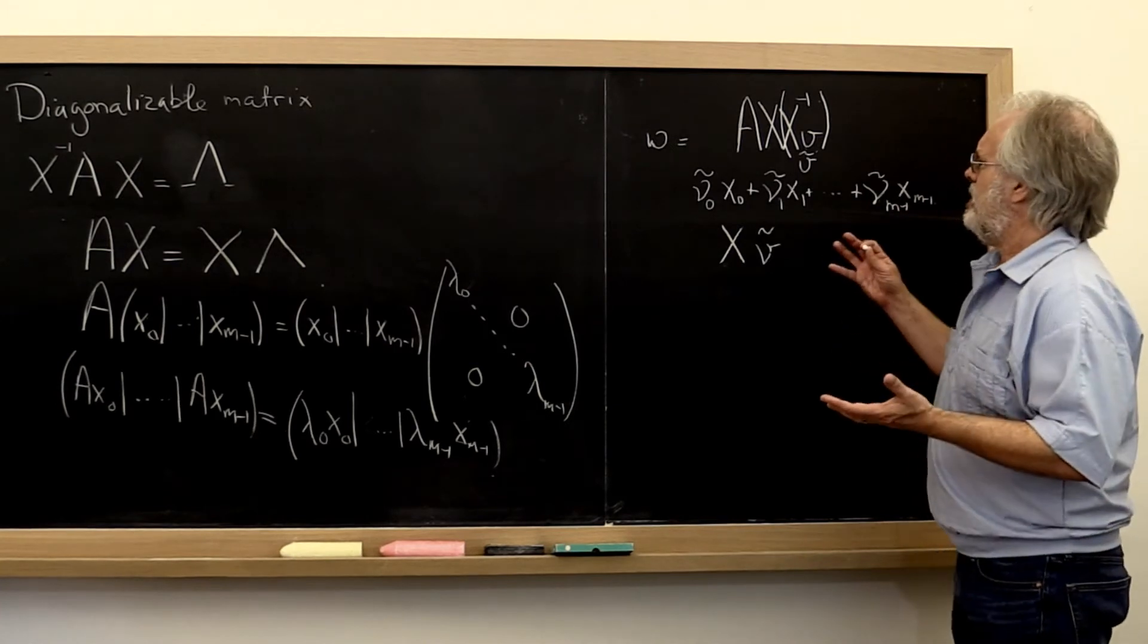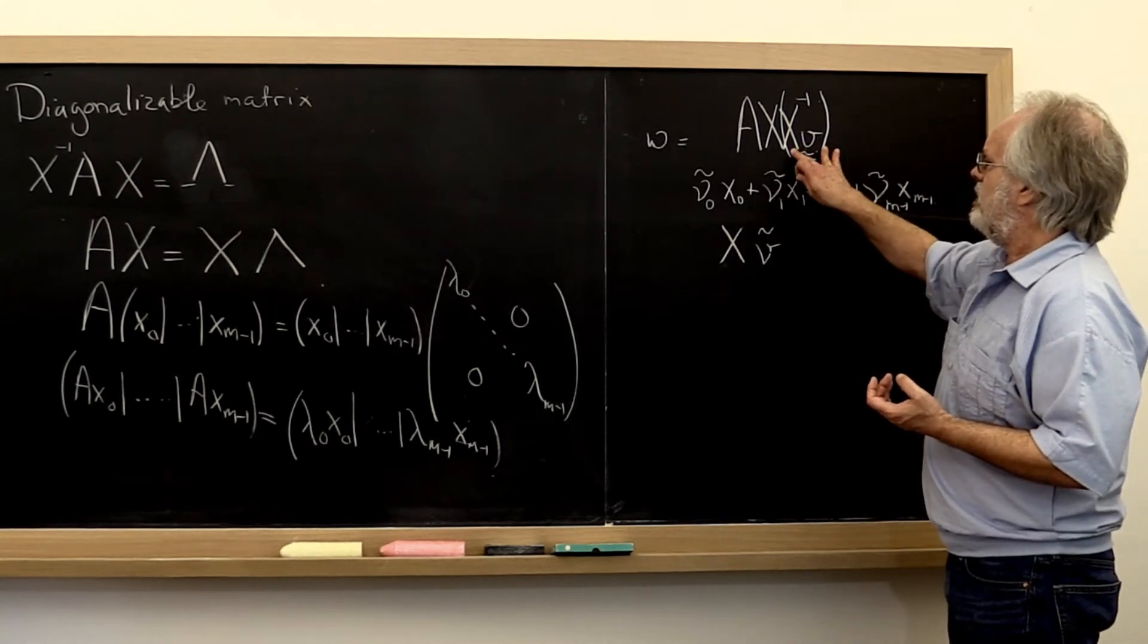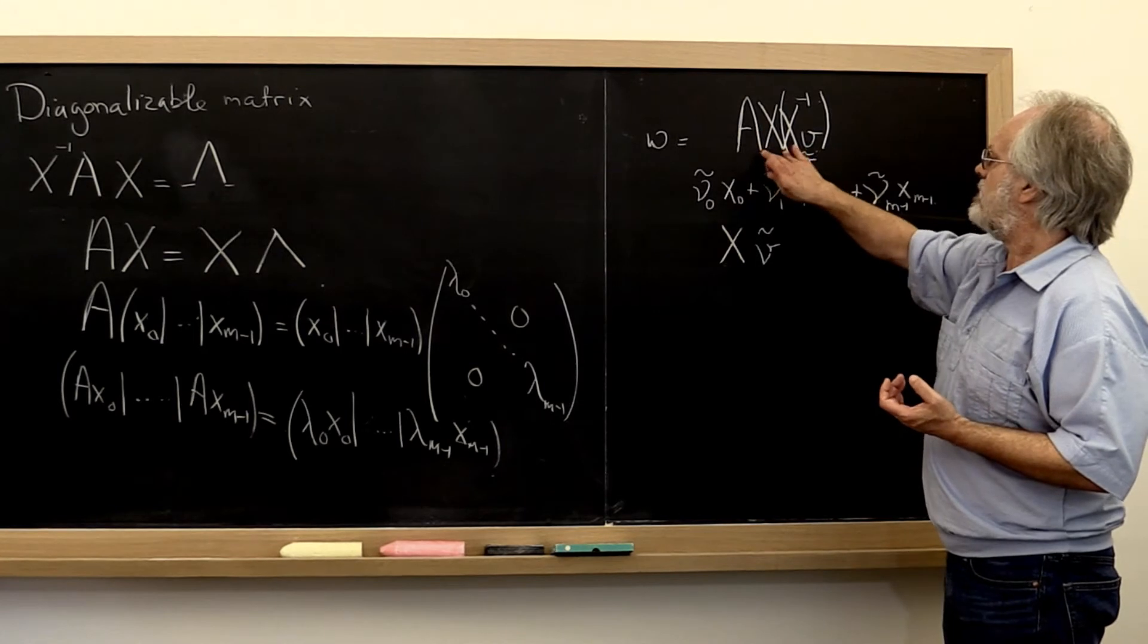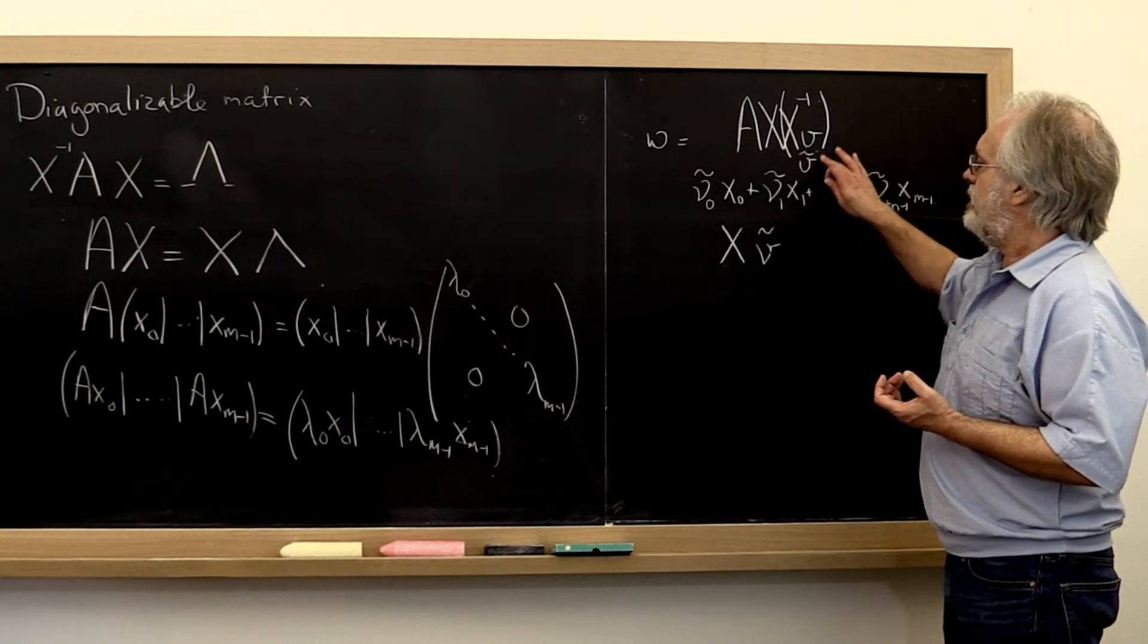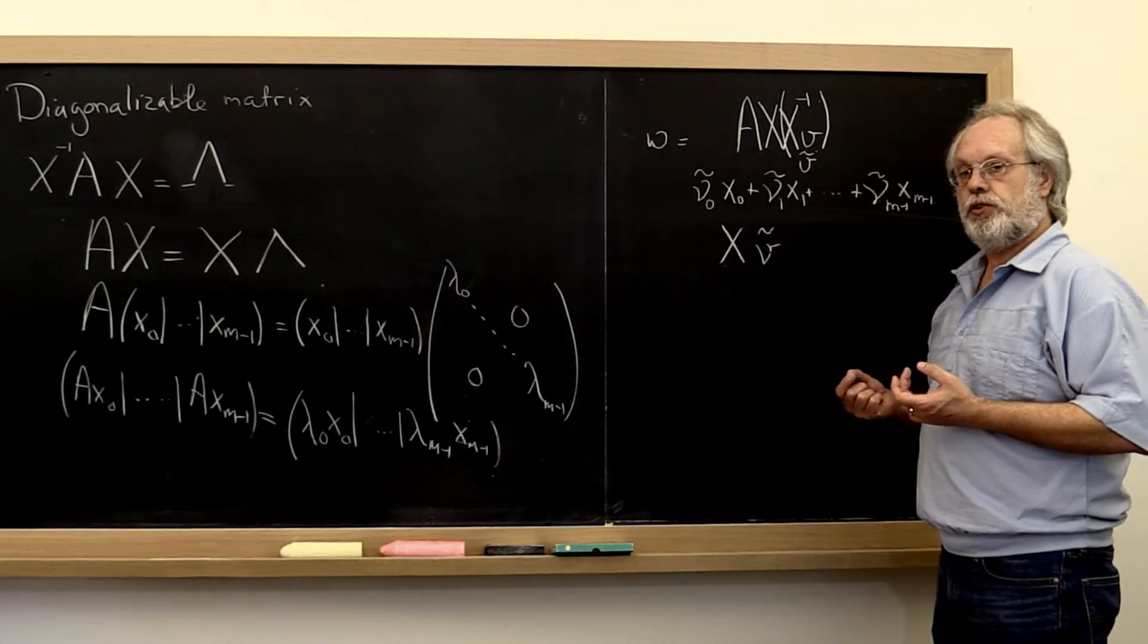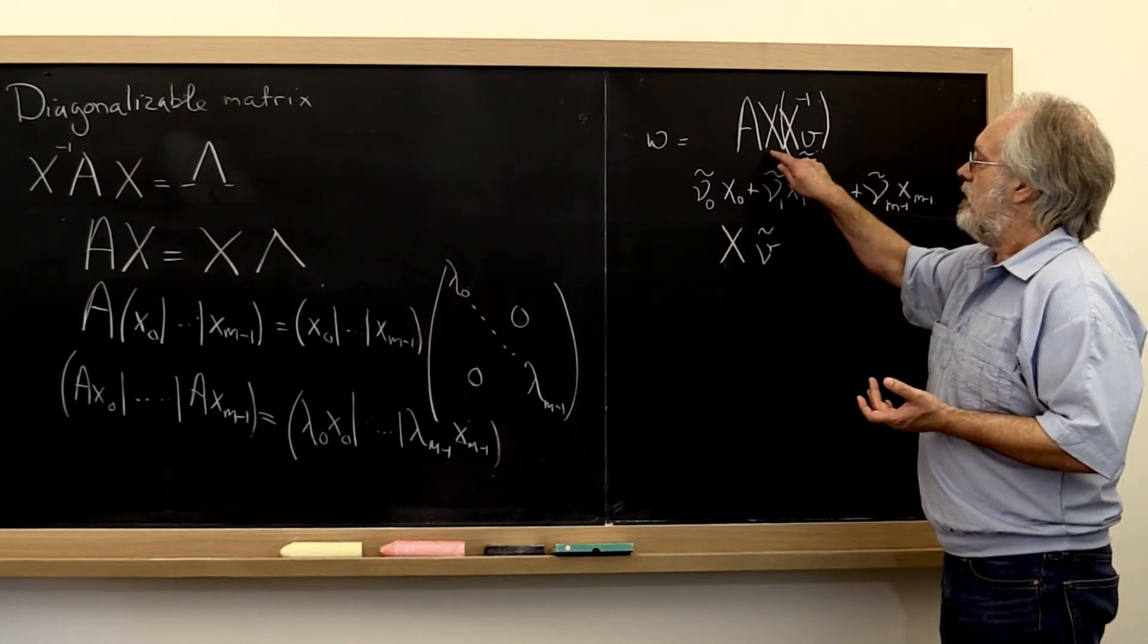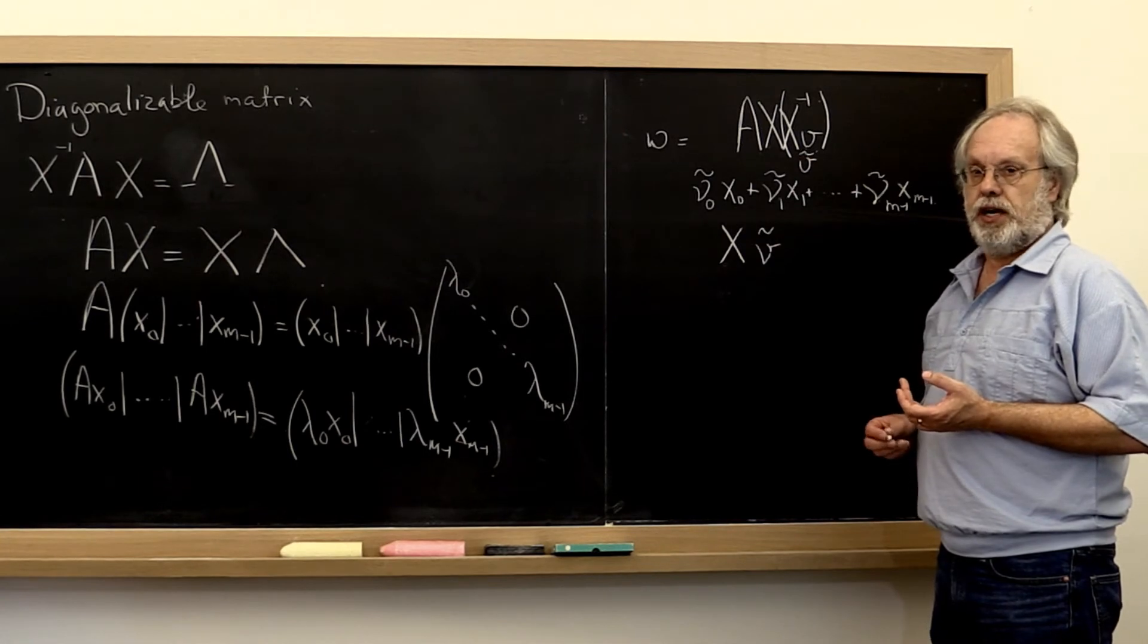So what does that really mean? All we've done here is we've replaced v with X times v tilde where we now, in v tilde, have the coefficients in terms of this basis that we get from the columns of our matrix X.